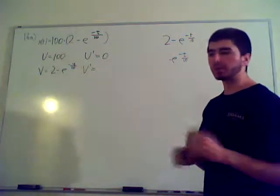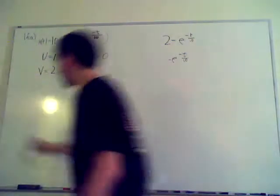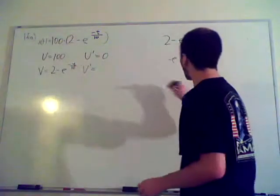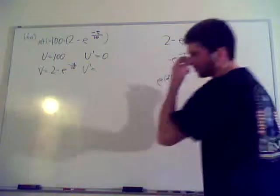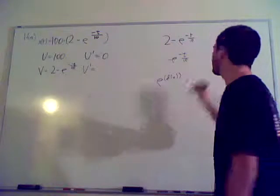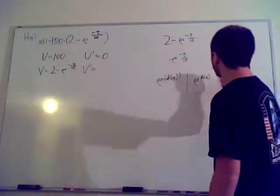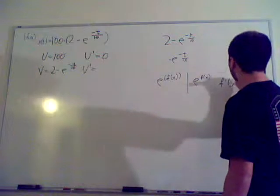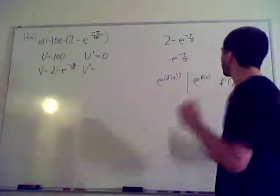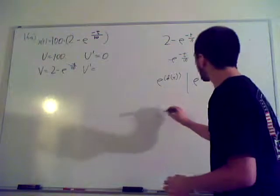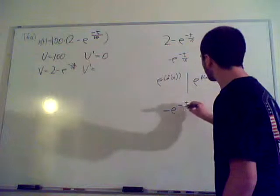Now using your stuff that you know about e, you can use your e to the f(x) property or identity. And say that it's equal to e to the f(x) times f prime of x. I kind of shot myself in the foot because I separated my line. Anyway, I'll keep writing down here. So you just copy the first part exactly as it is: e to the negative t over 10.